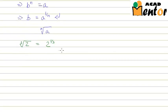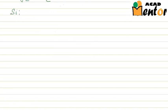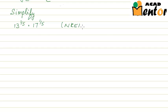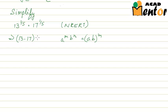Now let us look at a few questions. Say we are asked to simplify the following expression: 13 to the power 1 by 5, multiplied by 17 to the power 1 by 5. This is one of the questions from the NCERT textbook. We know that a to the power m, multiplied by b to the power m, is nothing but ab to the power m. Hence we can write this as 13 into 17, whole to the power 1 by 5, or 221 to the power 1 by 5. Since the nth root of a number can be represented as that number to the power 1 by n, this becomes the fifth root of 221.